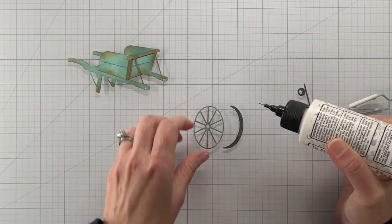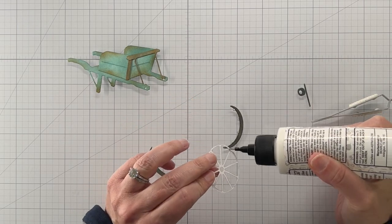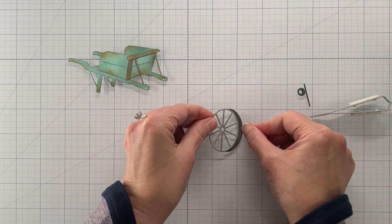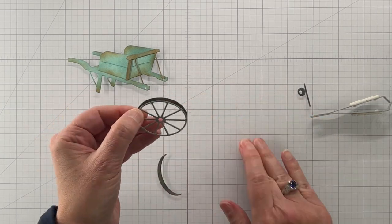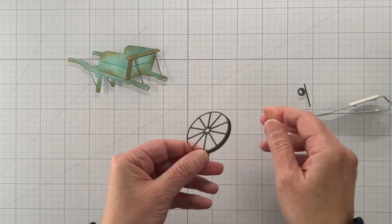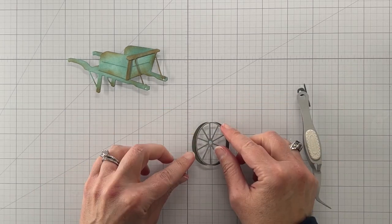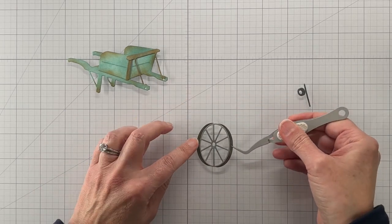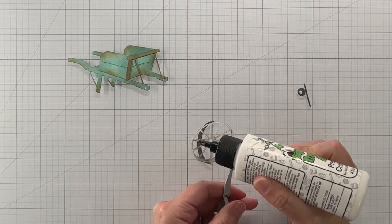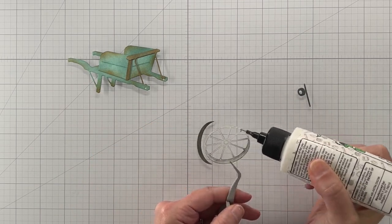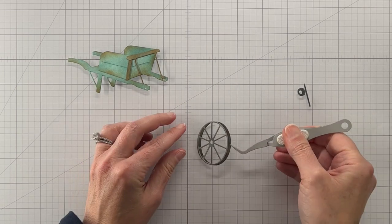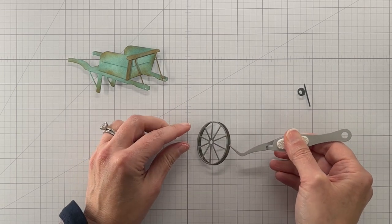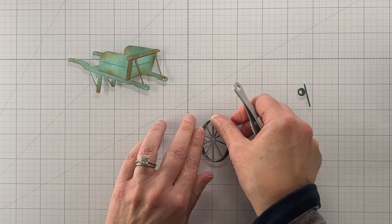So this part of the wheel is easy, like how to attach the little tire pieces, but over to the right you'll see this little kind of sliver of a piece of paper that attaches the wheel to the wagon, and that's where it got a little tricky for me.